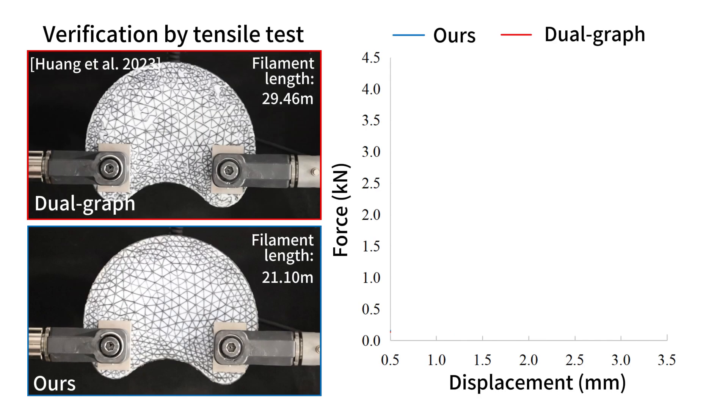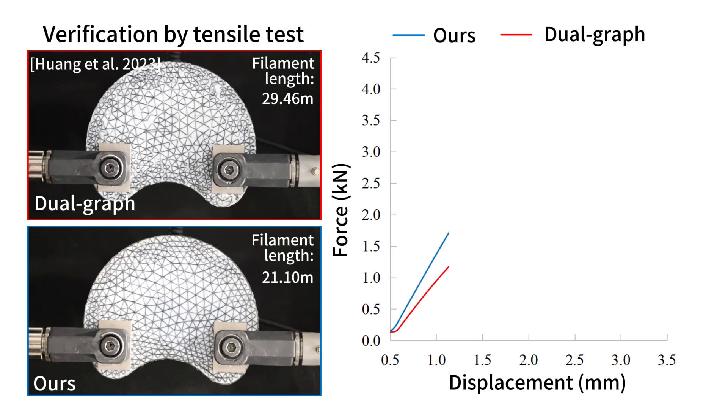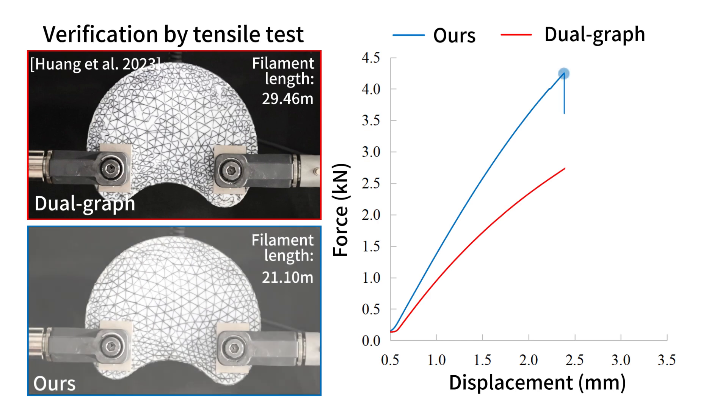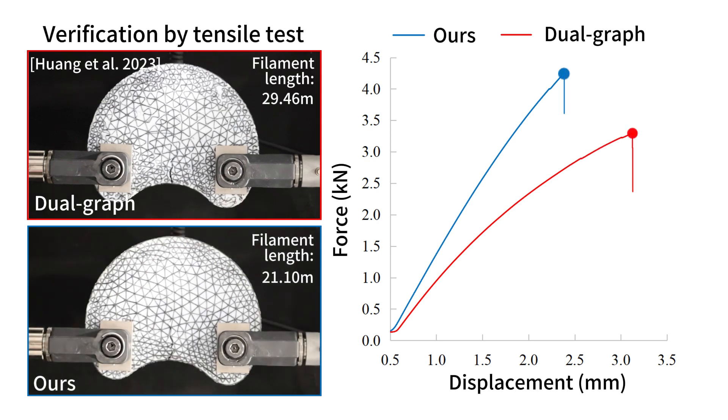The mechanical strength of the model fabricated by our toolpath has been verified in tensile tests. Compared with the dual graph-based method, our method can increase the breaking force by 29% while using 28% less continuous carbon fibers.